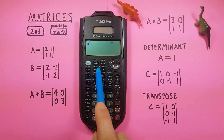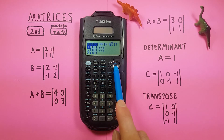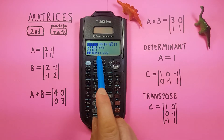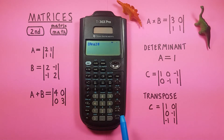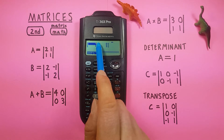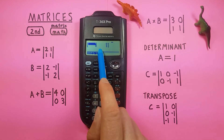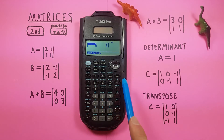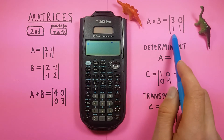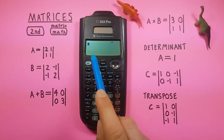When we go back to our matrix menu and scroll down to the fourth position, we see ANS — that's our answer, or last calculated matrix. Pressing enter twice brings that matrix back up on screen. This will always store the last result of any calculation we perform.